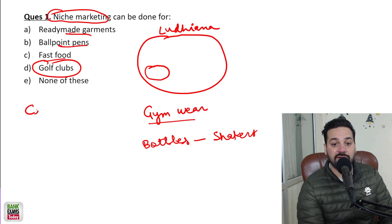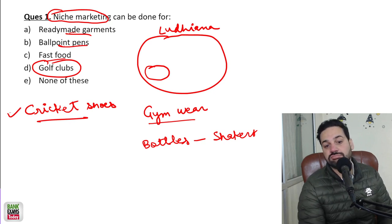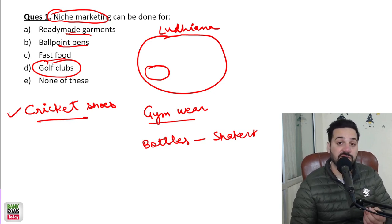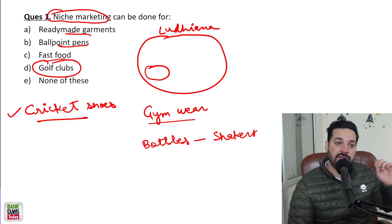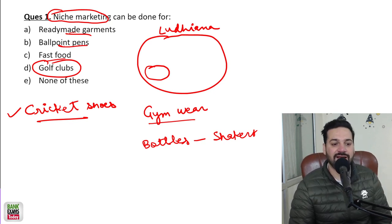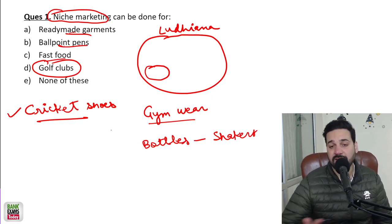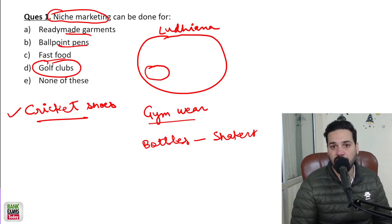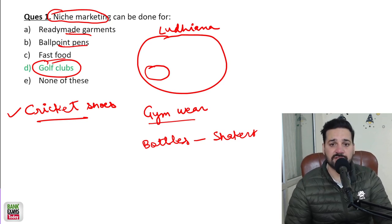Another good example: cricket shoes. Who is going to use cricket shoes? Anybody who is actually playing cricket — a professional cricketer. So niche marketing is when you are targeting a small segment of the whole market; it is interest-based. That is niche marketing. You can give me examples of niche marketing in the comment section if you want to. Golf club is a good example.